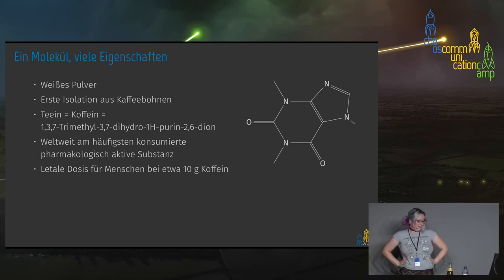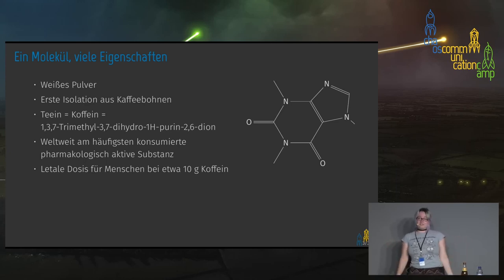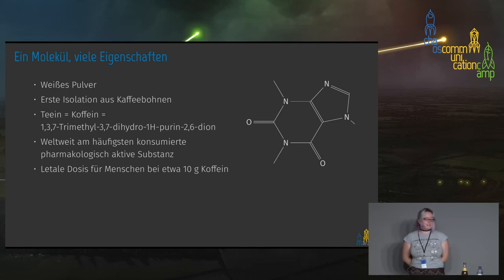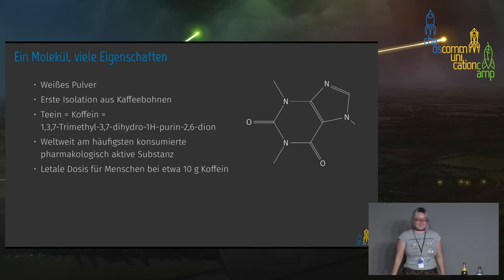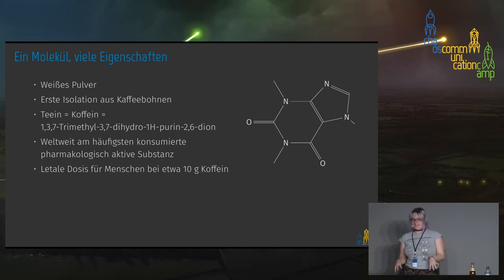The first extracted caffeine was from coffee beans, and Goethe was interested in what the stimulating substance in coffee was — he extracted this molecule and researched it. "Theine" is basically the same thing as caffeine. The official chemistry name is 1,3,7-trimethyl-3,7-dihydro-1H-purine-2,6-dione, but I just call it caffeine.